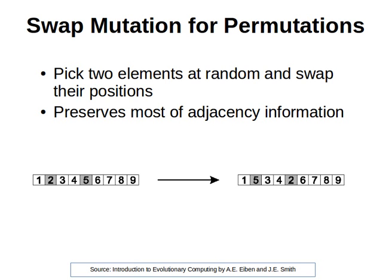Hello again. The second mutation method we wanted to learn in this series is called the swap mutation. As the name suggests, it is extremely easy. What we do is take our input chromosome, randomly pick two elements, and then swap their positions. It's as simple as that.